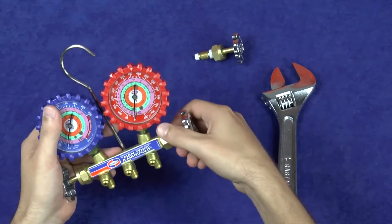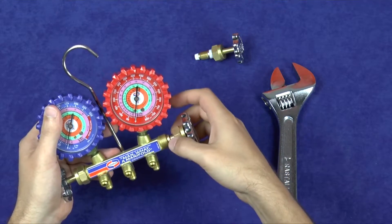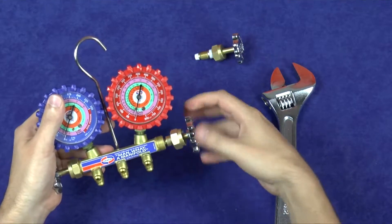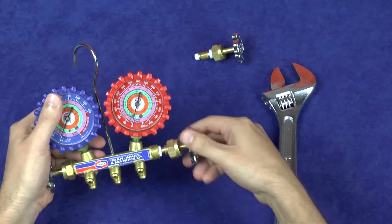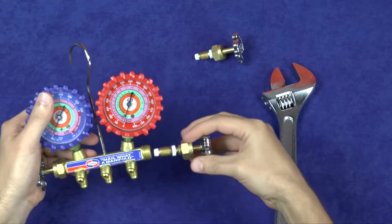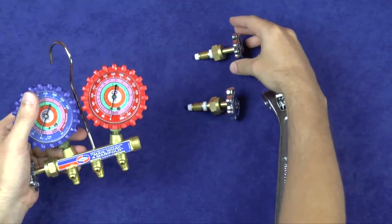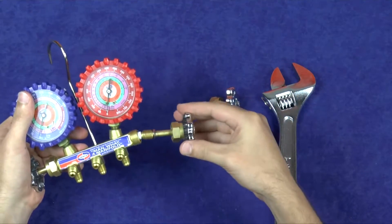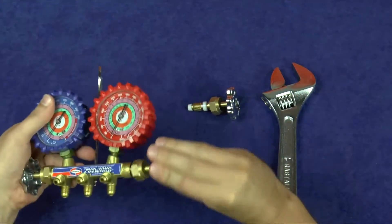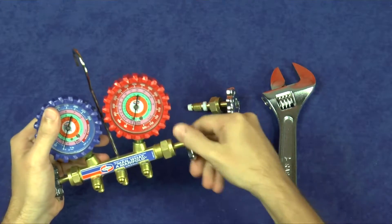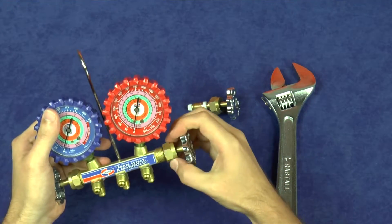To repair the manifold, unscrew the brass packing nut and remove the valve stem assembly from the manifold body by turning the metal hand wheel counterclockwise. Screw the new valve assembly onto the manifold body by turning the metal hand wheel clockwise and tighten the brass packing nut on the manifold body for a complete seal.